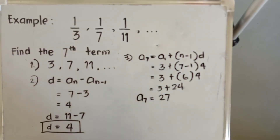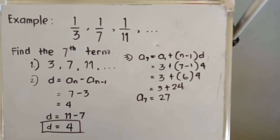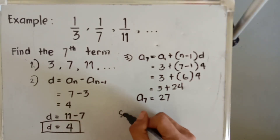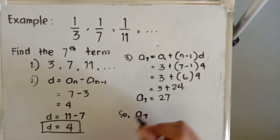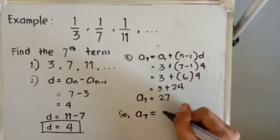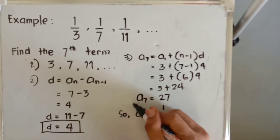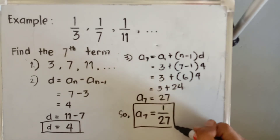Therefore, the seventh term of the arithmetic sequence is twenty-seven. But we are looking for the seventh term of the harmonic sequence. You only have to get the reciprocal of it. So the seventh term of your harmonic sequence is equal to one over twenty-seven. This is our final answer.